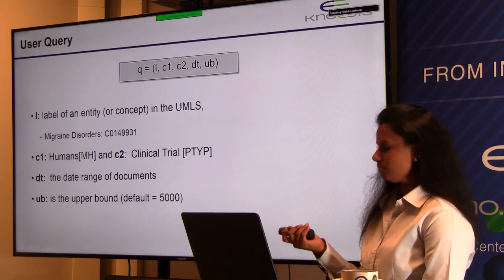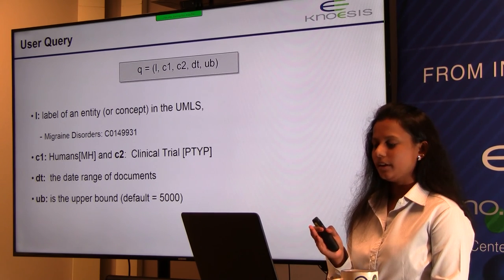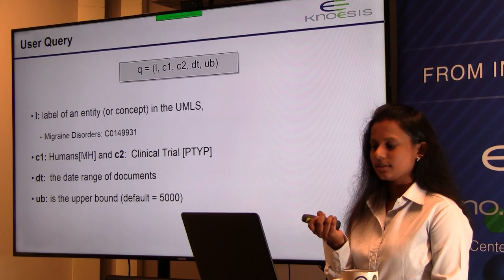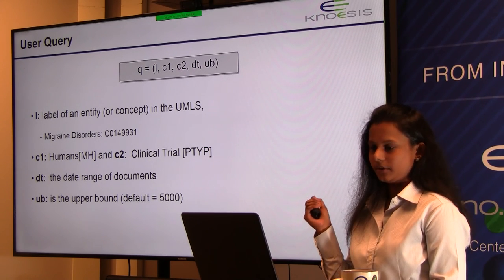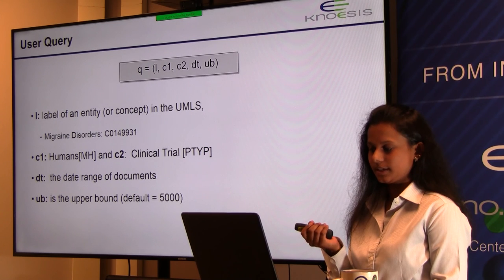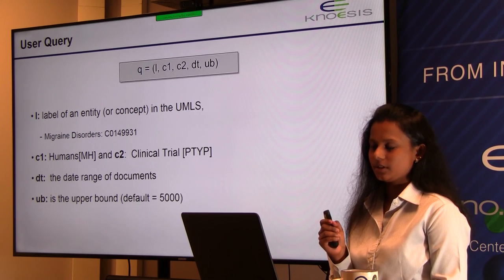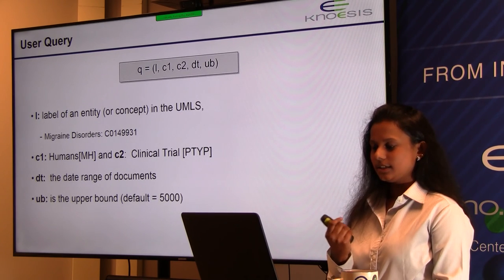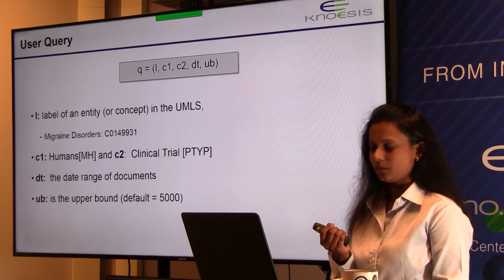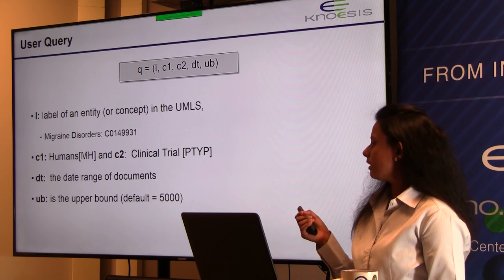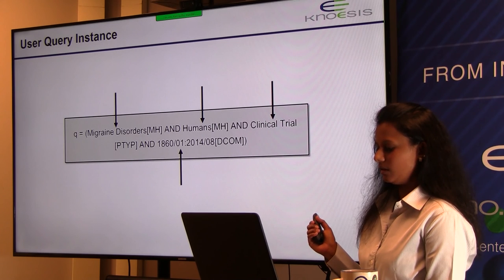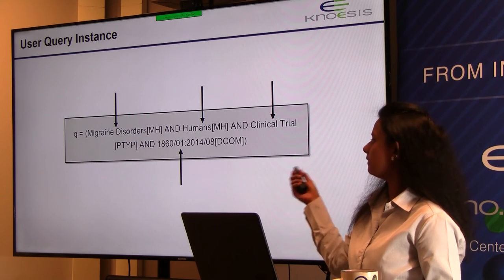The user query in RESCU is a tuple containing five elements: L, a label of an entity or concept in the UMLS (e.g., Migraine Disorders); C1 and C2, MeSH indexing terms used for searching PubMed citations; DT, the date range of documents; and UB, the upper bound on the number of documents to retrieve, defaulting to 5,000. An example instance of a query for Migraine Disorders with these five elements is used to illustrate the structure.